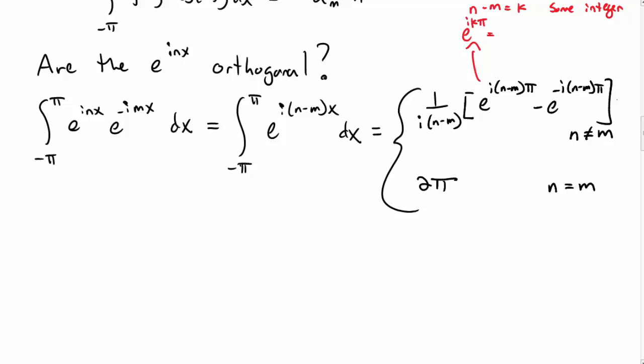And you should convince yourself that e^(ikπ) is the same as e^(-ikπ). If you think about that a little bit on the complex plane, it will make sense for an integer k. And so then these two terms cancel. So I get 0 if n is not equal to m, or 2π if n is equal to m.